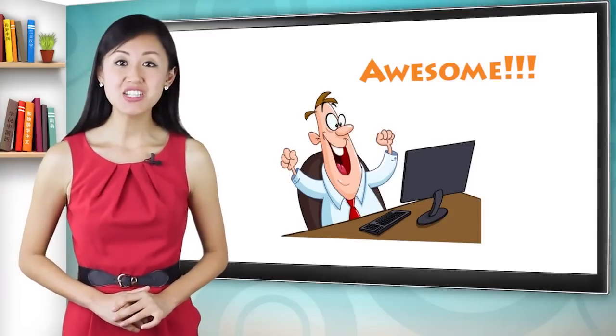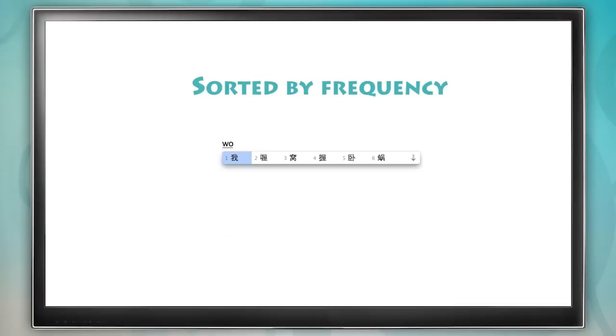The computer does the hard work for you. After you type in W-O, the computer pulls up a list of characters that it thinks you might have in mind. And the characters are always sorted by frequency, with the most commonly used characters at the top of the list.